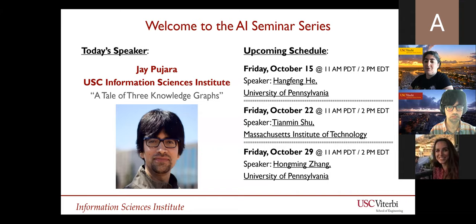He completed a postdoc at UC Santa Cruz, earned his PhD at the University of Maryland College Park, and received his MS and BS from Carnegie Mellon University. Jay has also worked in industry at Yahoo, Google, LinkedIn, and Oracle. He is the author of over 50 peer-reviewed publications and has received four best paper awards, and his work has been featured in AI magazine.